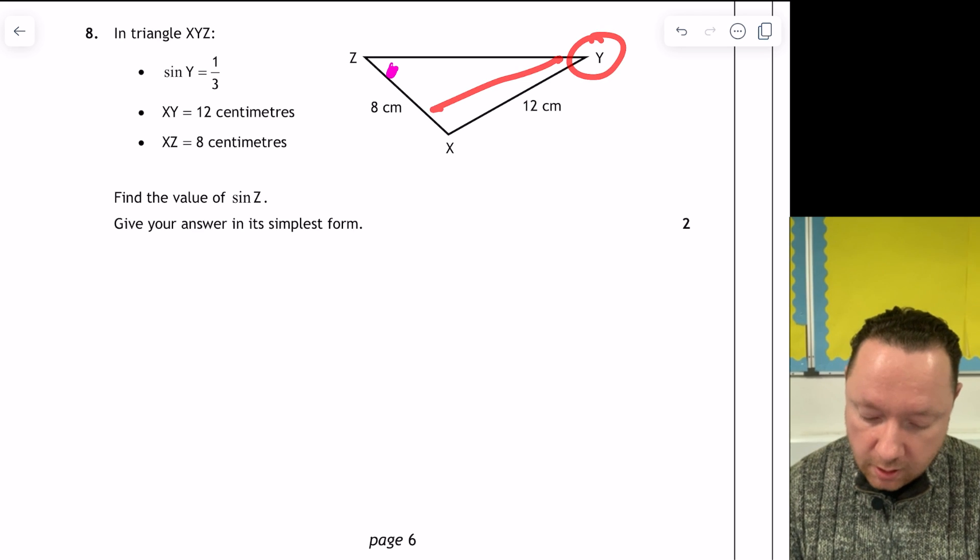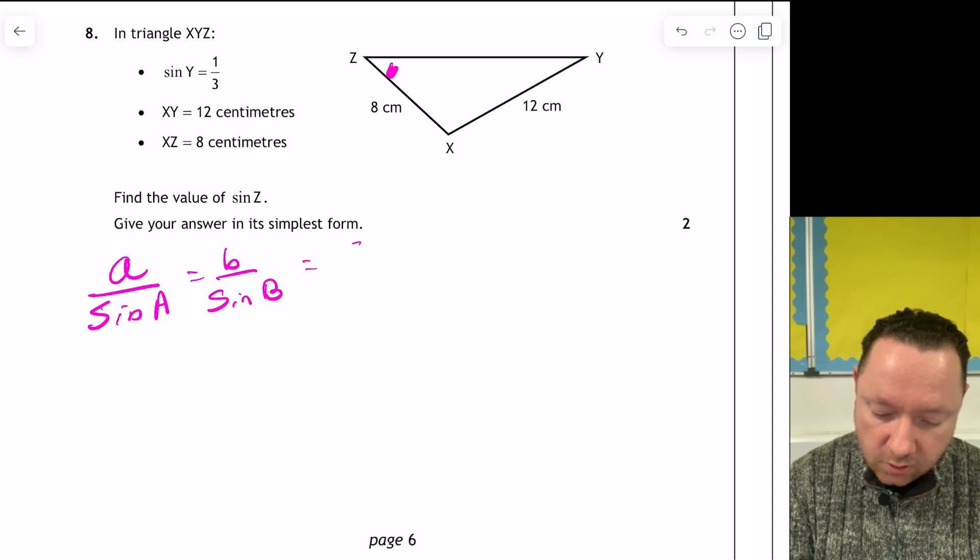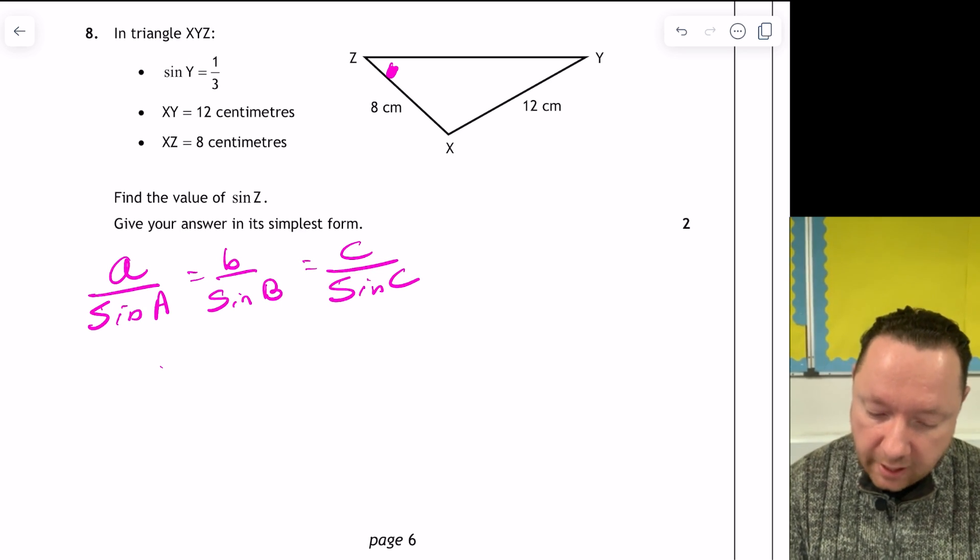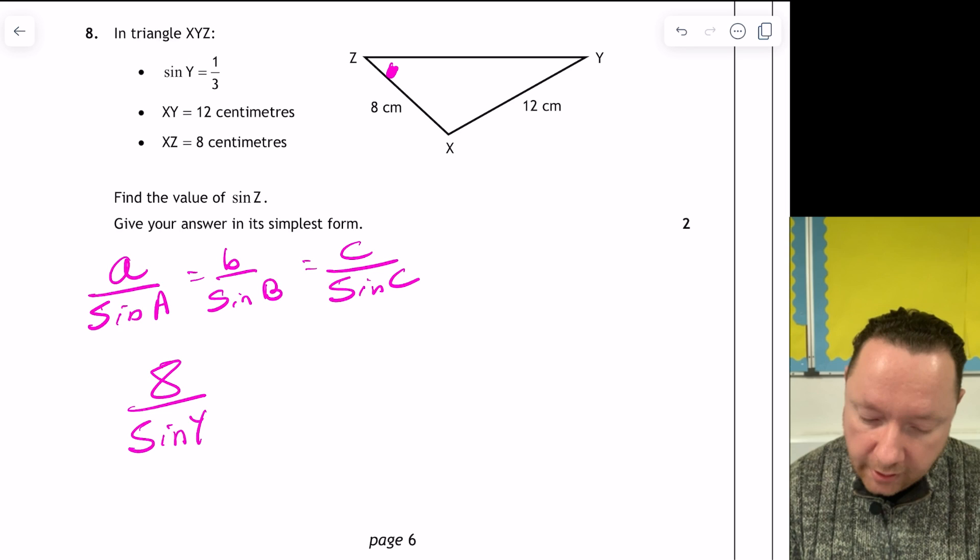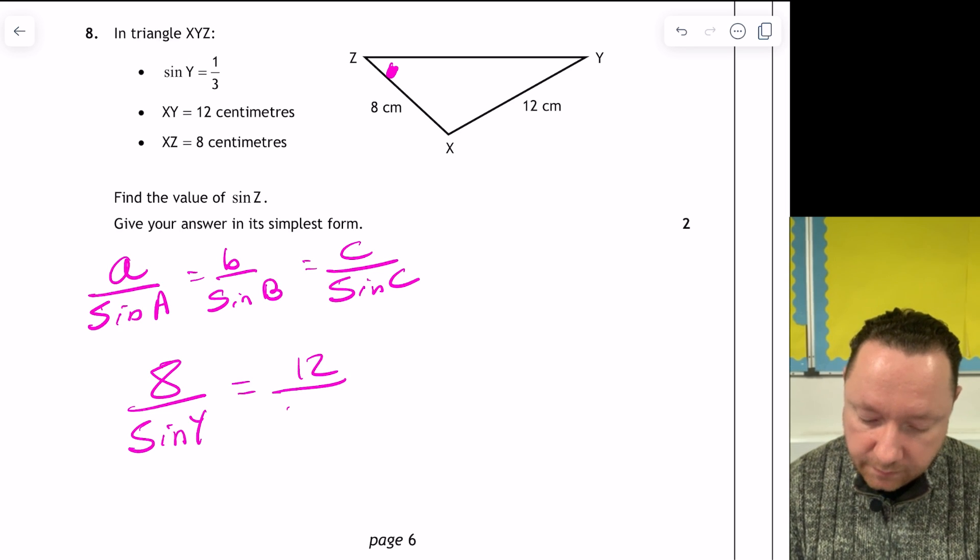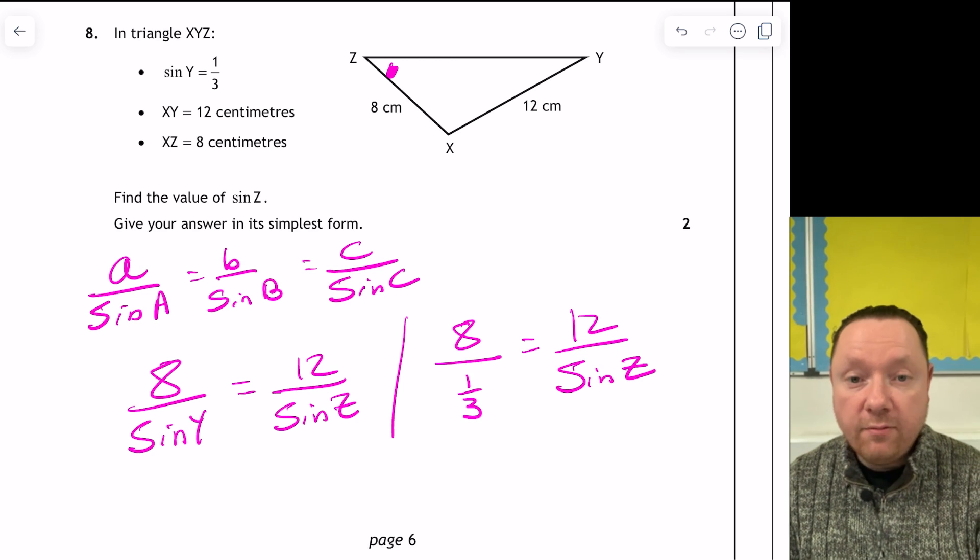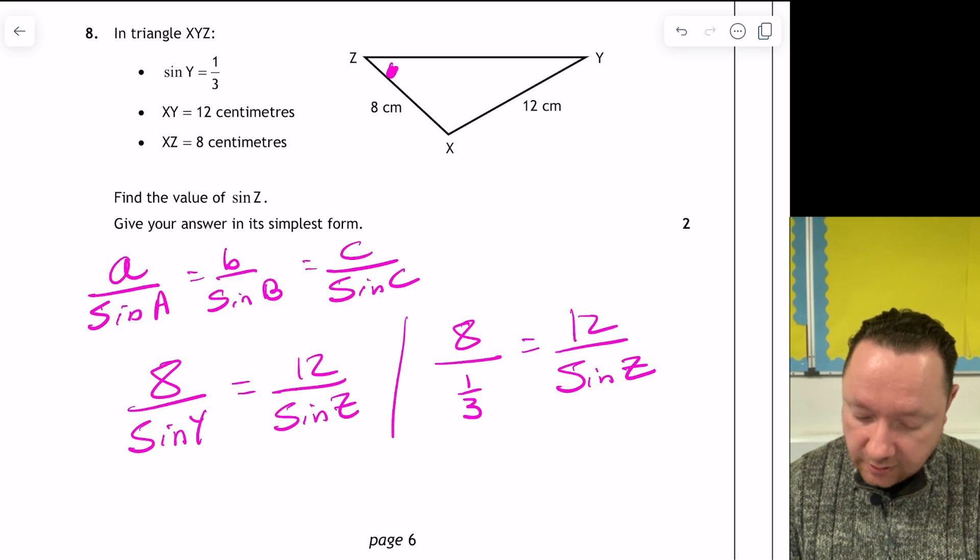It tells me sine y here. So I've got these as well. The sine rule, it says at the start of the exam paper, a over sine a, b over sine b, c over sine c. So it's really just reminding you that pairs go together. So let's do our first pair. We've got 8 and sine y. 8 over sine y equals 12 over sine z. But we know sine y. So that's 8 over a third equals 12 over sine z.